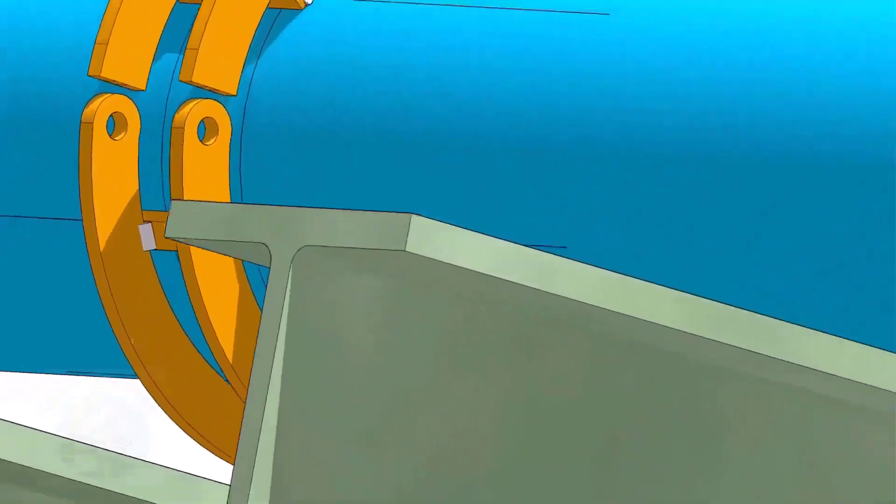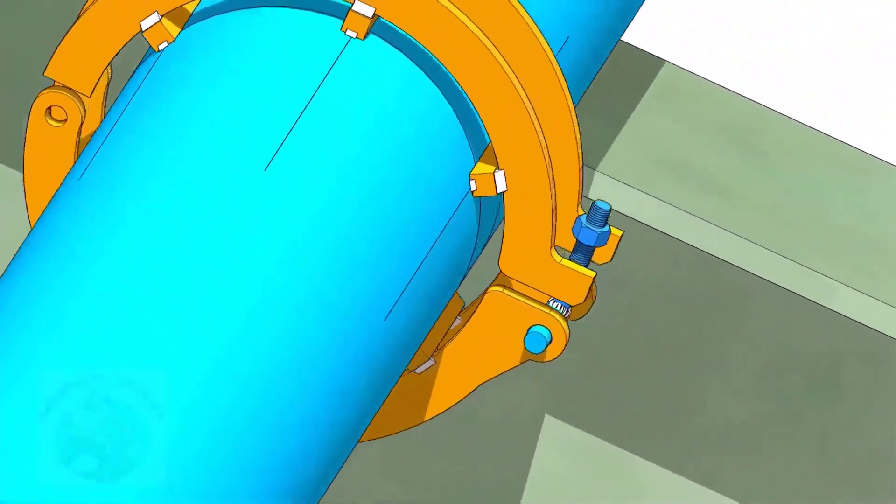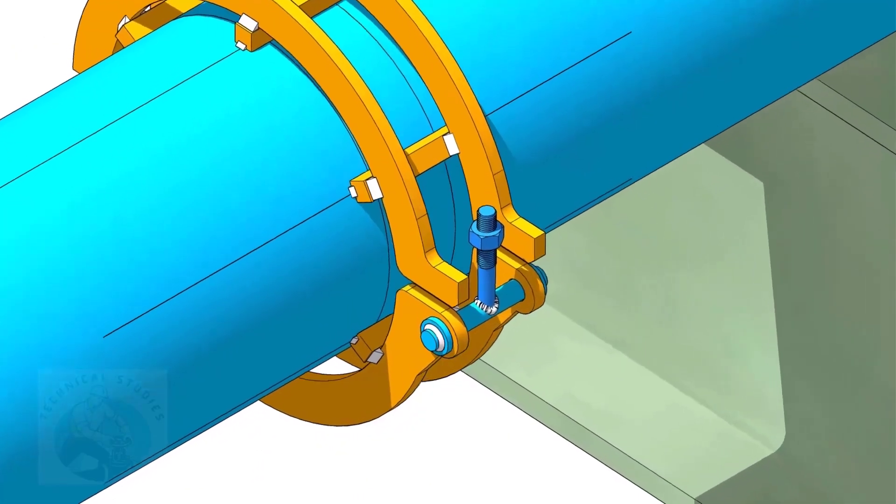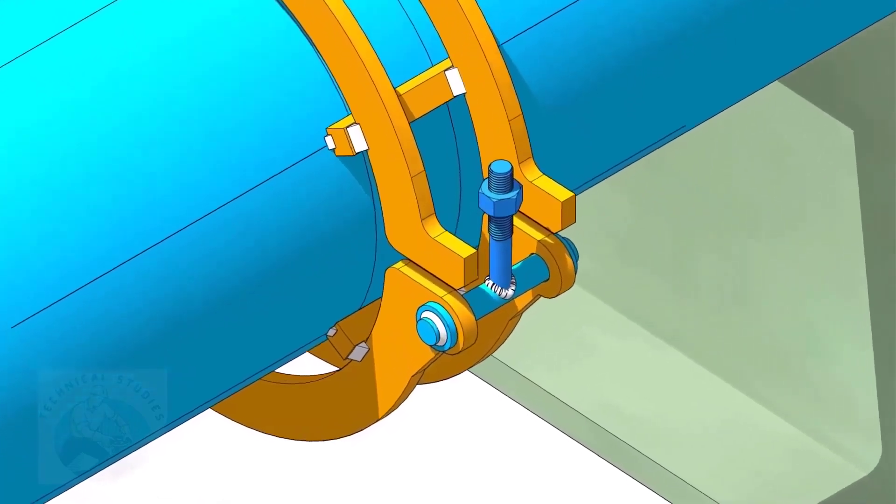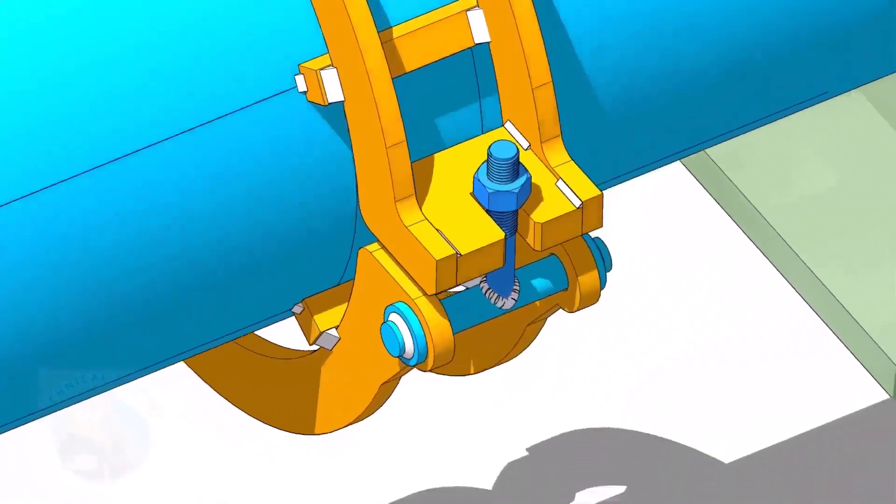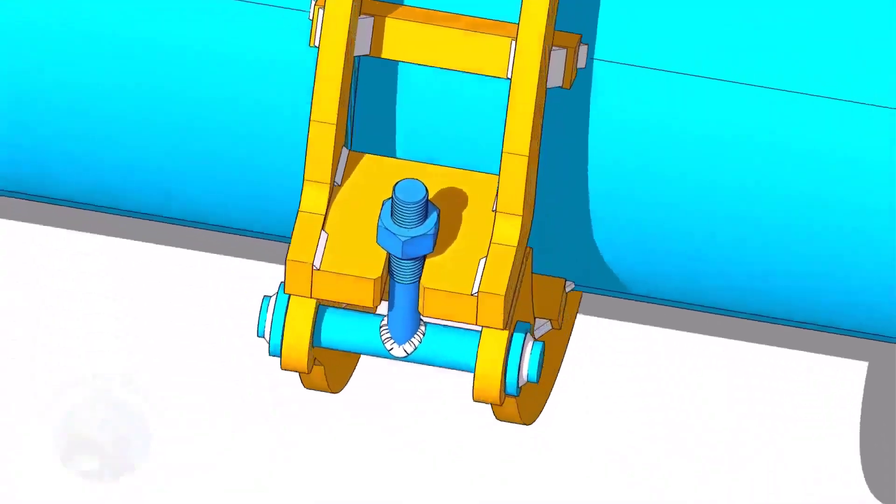First, put the bolt and the hinge plates, and tack weld the hinge plates with the top rings. Tack weld the slotted plate with the top rings as shown.